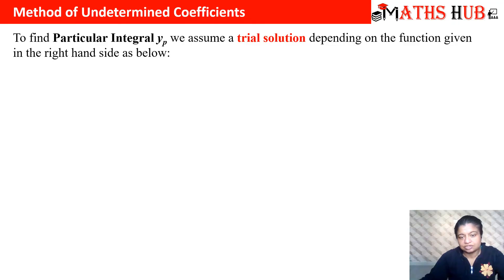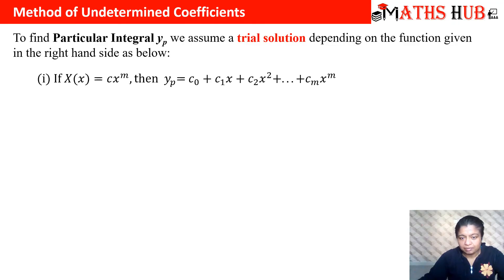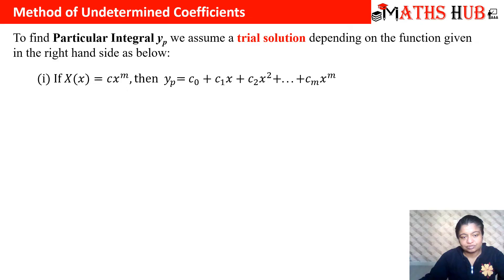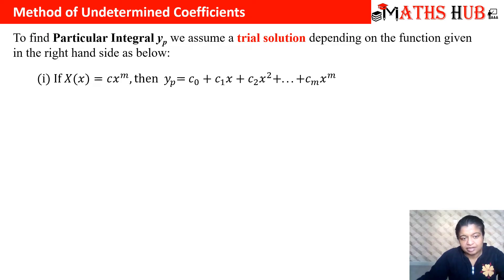How is the trial solution to be assumed? If your right-hand side function is some power of x to the m, we assume the trial solution to be a polynomial: c0 + c1x + c2x² and so on up to x to the power m. For example, if you have x², we assume c0 + c1x + c2x². If it is x³, we take all terms up to x³.